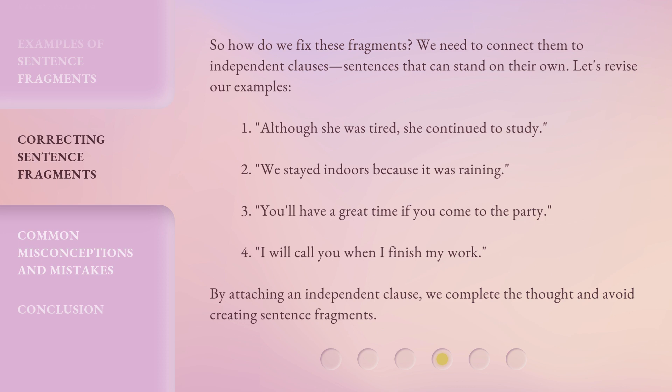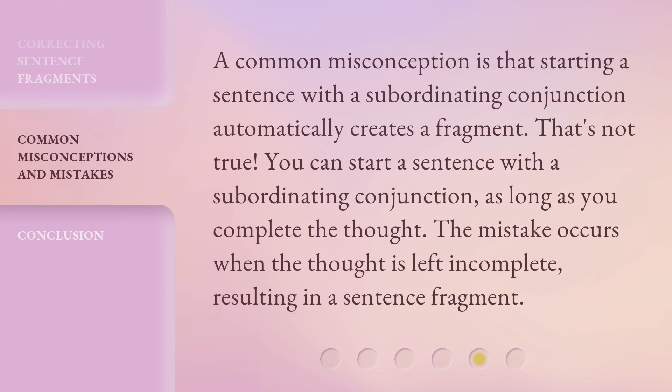By attaching an independent clause, we complete the thought and avoid creating sentence fragments. A common misconception is that starting a sentence with a subordinating conjunction automatically creates a fragment. That's not true. You can start a sentence with a subordinating conjunction as long as you complete the thought. The mistake occurs when the thought is left incomplete, resulting in a sentence fragment.